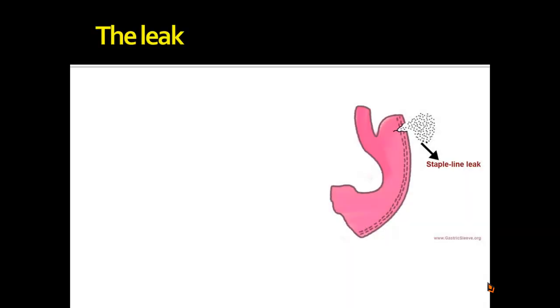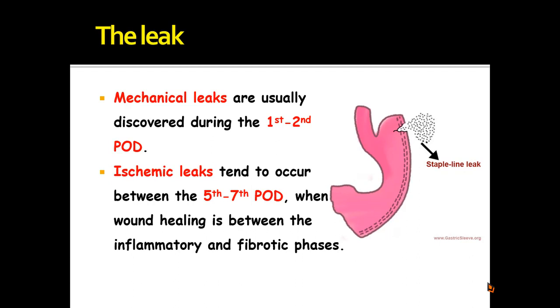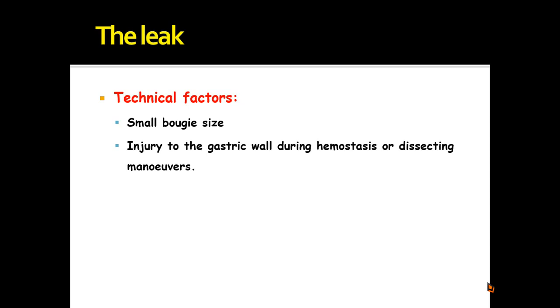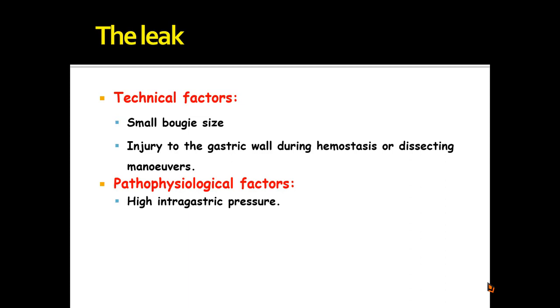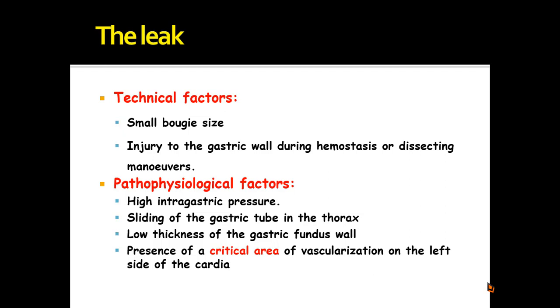Now I will discuss a serious complication: the leak that may follow sleeve gastrectomy. There are two types: mechanical leaks, usually discovered during the first days post-operatively; and ischemic leaks, which tend to occur later — between the fifth and seventh days post-operatively — when wound healing is between the inflammatory and fibrotic phases. Technical factors responsible for the leak include using a small pouch size, injury to the gastric wall during hemostasis or dissecting maneuvers. Pathophysiological factors include high intragastric pressure, sliding of the gastric tube into the thorax, the low thickness of the gastric fundus wall, and the presence of a critical area of vascularization on the left side of the cardia.